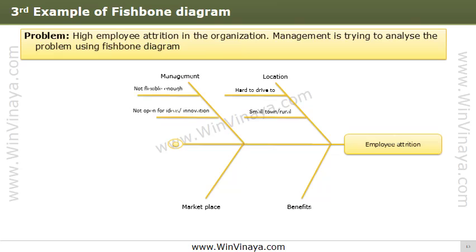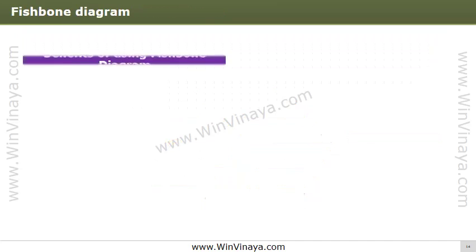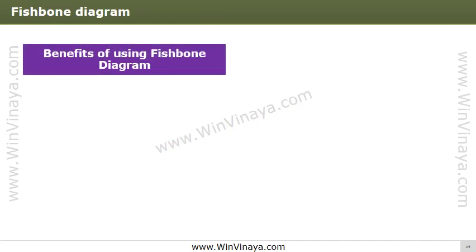Under the management category, causes could include management being inflexible or not open to new ideas and innovation. Under marketplace, causes may be high demand for workers in the job market or higher salaries offered by other companies. Under benefits, causes may be employees drawing too low a basic salary or not receiving other benefits. For each cause, identify the reason and arrive at the root cause.